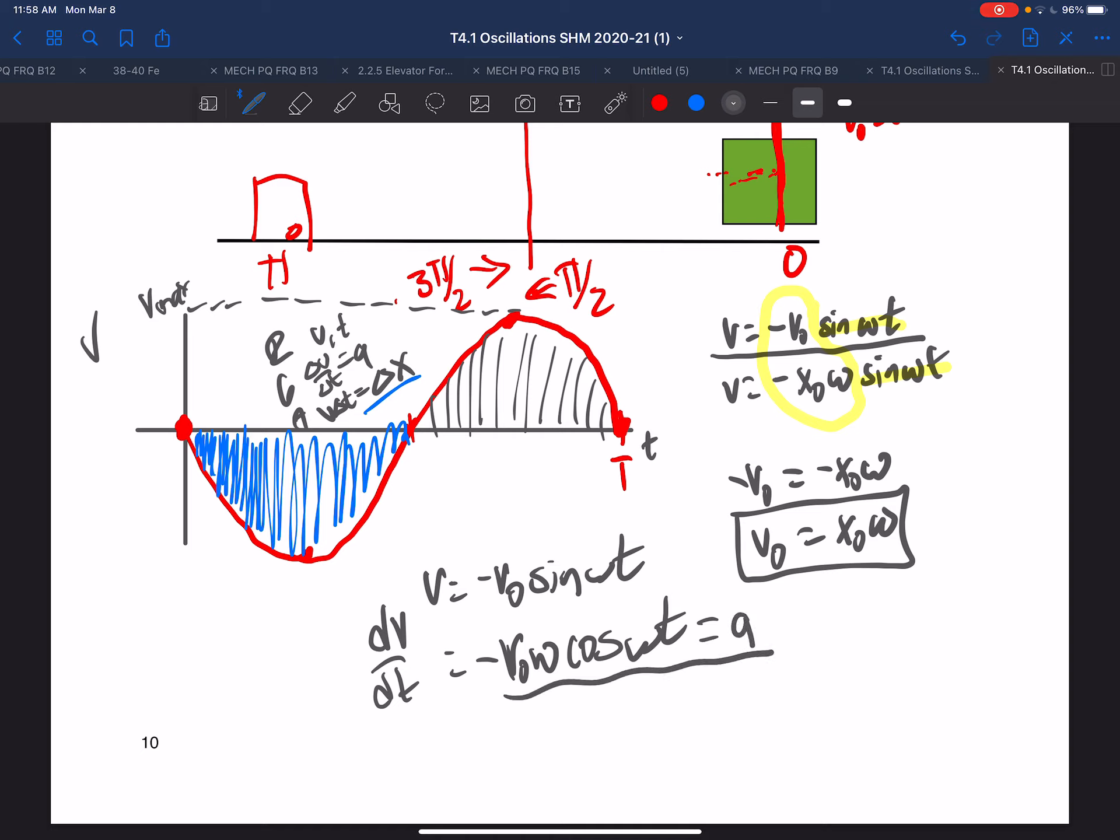Now, the slope in this case, we see is, let me do it in blue. This is a negative max. Here, it is zero. Here is it a positive max. Here is zero. And here, it's at a negative max again. In our next installment, we'll look at acceleration a little more closely.